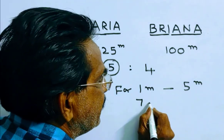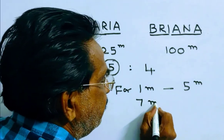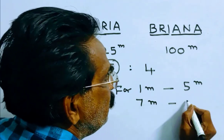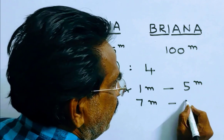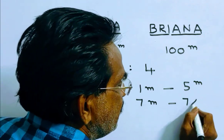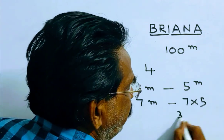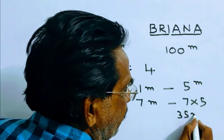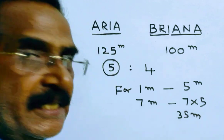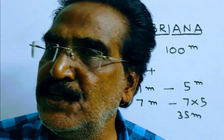Here, Briana gets a lead of 7 meters. So the length of the race is 7 × 5 = 35 meters. Thank you.